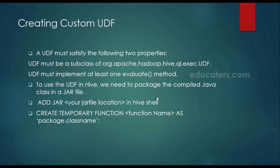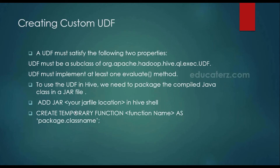Whatever custom UDF you are writing in Hive, it must override the evaluate method. It must extend the org.apache.hadoop.hive.exec.udf — you must extend the UDF class and override the evaluate method. Once you write the program code for your custom UDF — like converting temperature from Fahrenheit to centigrade or anything else — you write your code, export it into a jar file, then add that jar into your Hive shell, then create a temporary function to call your custom UDF method. Let me log into the Cloudera Quickstart VM and show you how to write your own custom UDFs.